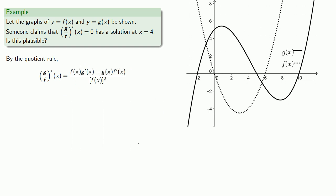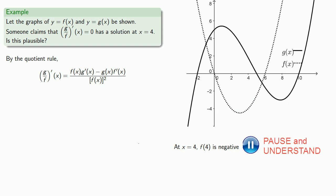Let's consider the signs of the different components of the derivative when x is equal to 4. The denominator is going to be f of 4, and since we have the graph of y equals f of x, f of 4 is the y value on the graph when x equals 4. We see that f of 4 is going to be negative because the y value is negative — and when we square it, we're going to get a positive number. Most importantly, that denominator is not equal to 0.